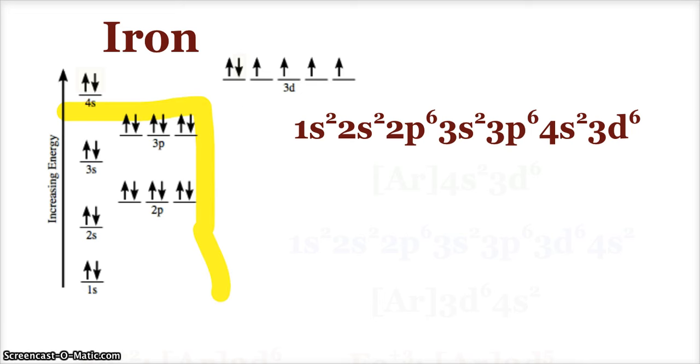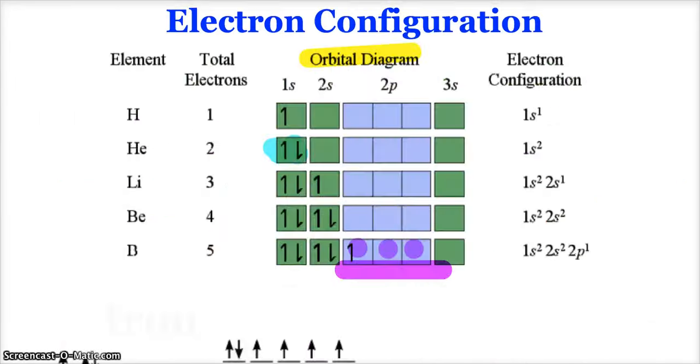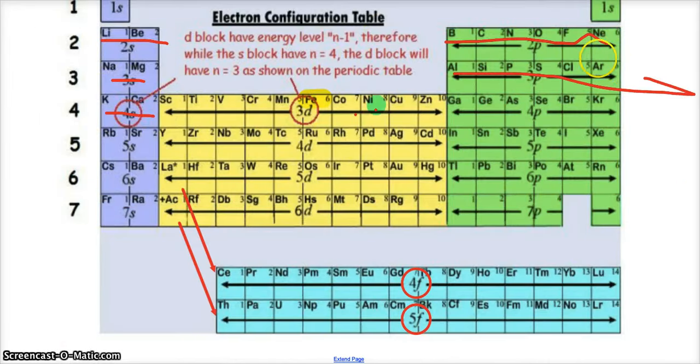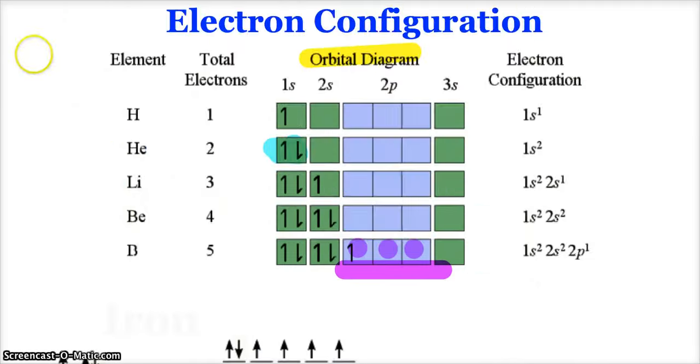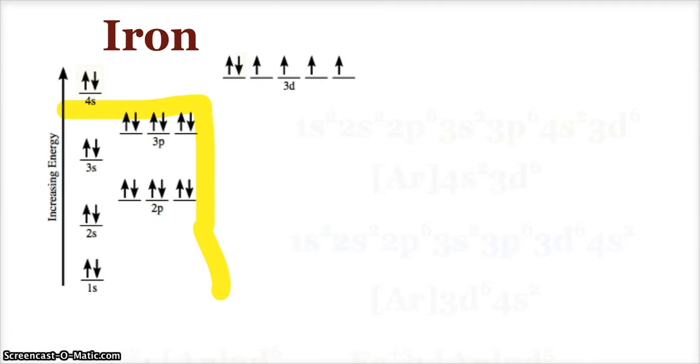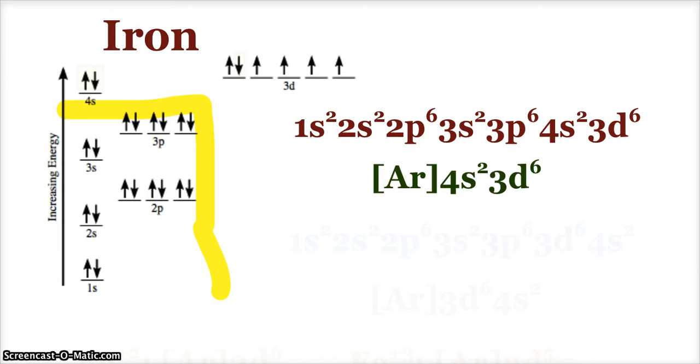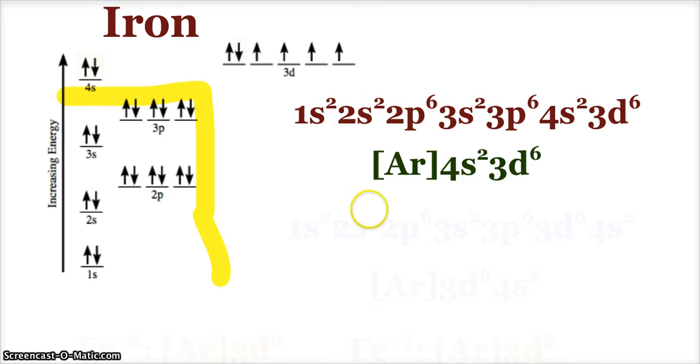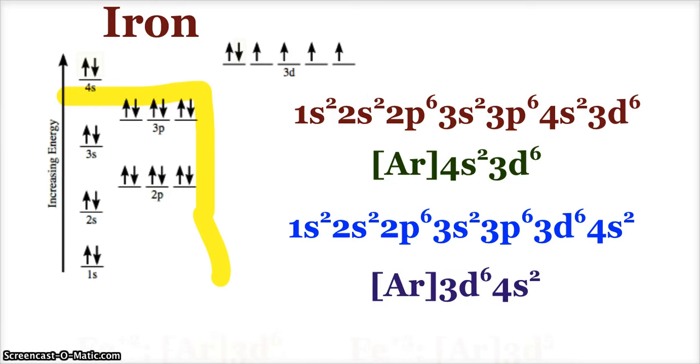Up to here, that is the electron configuration of argon. Argon is the closest noble gas to iron that we have passed on the way to iron. So I can write the shortened version for iron by substituting in argon for its part. I just have [Ar] 4s² 3d⁶. You can also see electron configurations written where you group the threes together and write 4s², so you might see [Ar] 3d⁶ 4s²—that's the spectroscopic version.